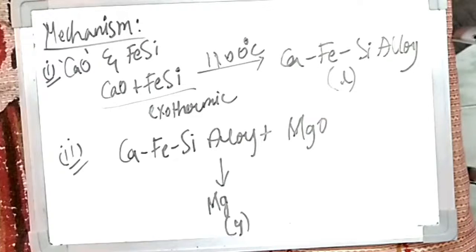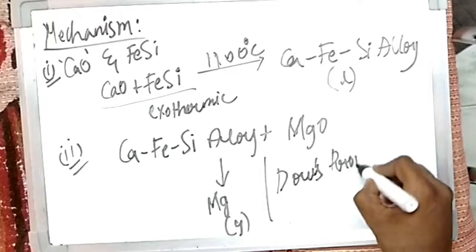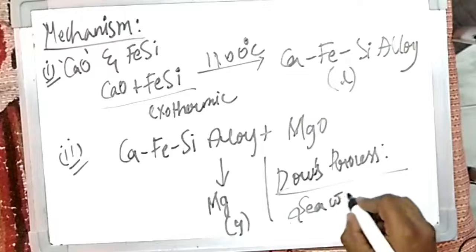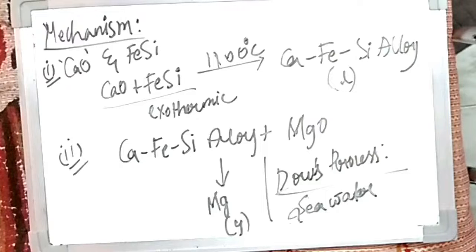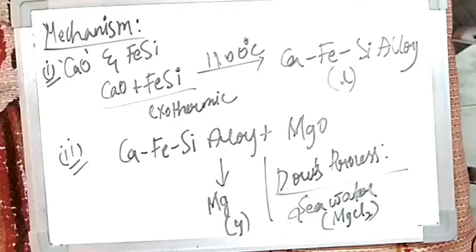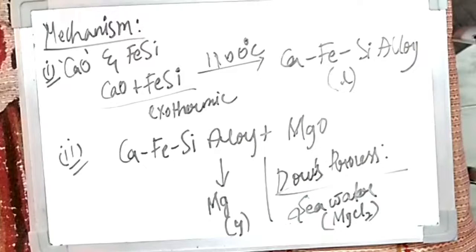There is one more process — the Dow process — through which magnesium can also be extracted. The Dow process uses seawater. As we know, seawater contains chloride salts such as sodium chloride and magnesium chloride. From the MgCl₂ present in seawater, magnesium is extracted — that is the Dow process. The most economical process overall is the Pidgeon process, but the Dow process extracts magnesium specifically from seawater.